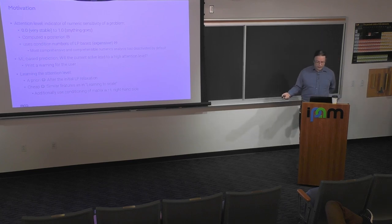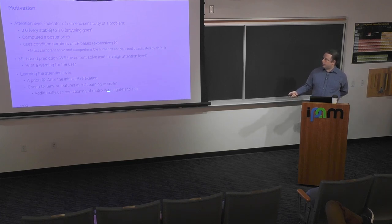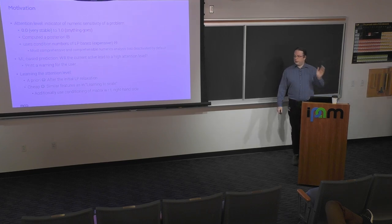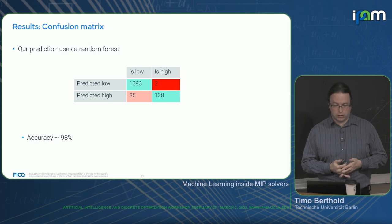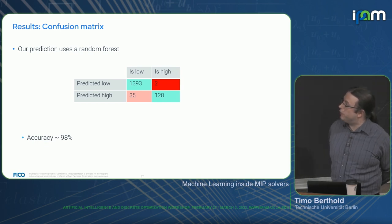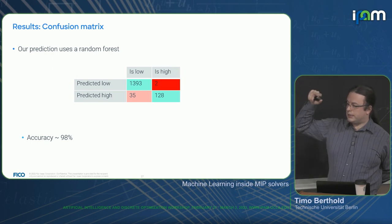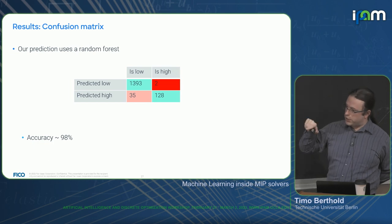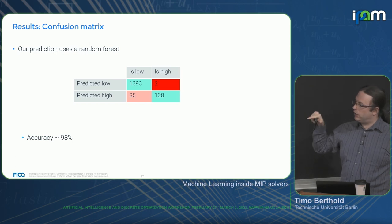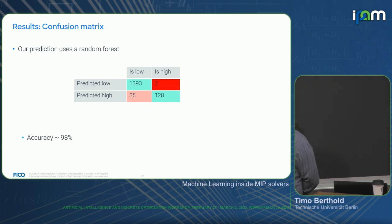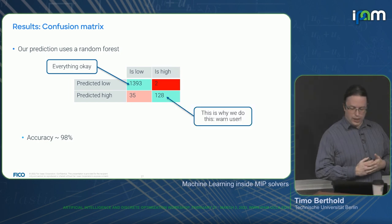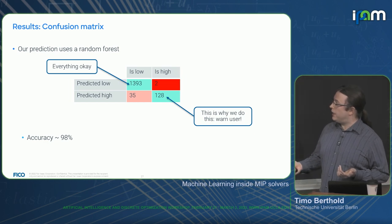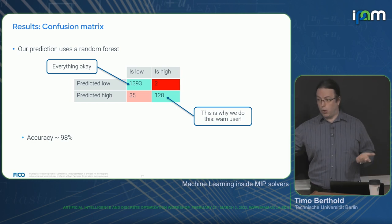We use the same features as for learning to scale, plus a fourth one: the conditioning of the matrix with respect to the right-hand side. In this case we settled for a random forest, since linear regression was not good enough. The confusion matrix shows accuracy of about 98%. The most common case is that everything is fine and the prediction agrees. The next most common: the actual attention level is high and we predicted it to be high — which is why we do all of this.